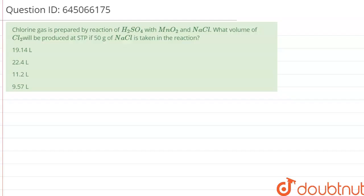Hello everyone, in this question we have been given: Chlorine gas is prepared by reaction of H2SO4 with MnO2 and NaCl. What volume of Cl2 will be produced at STP if 50 gram of NaCl is taken in the reaction?